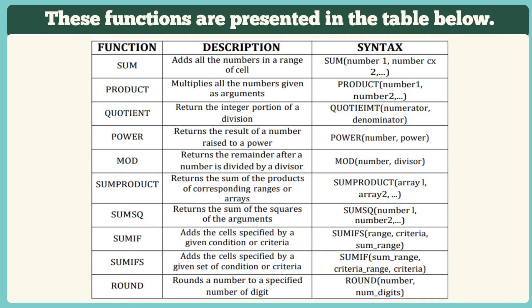PRODUCT multiplies all the numbers given as arguments. QUOTIENT returns the integer portion of a division. The POWER function returns the result of a number raised to a power. MOD returns the remainder after a number is divided by a divisor. SUMPRODUCT returns the sum of the products of corresponding ranges or arrays. SUMSQ returns the sum of the squares of the arguments. SUMIF adds the cells specified by a given condition or criteria.